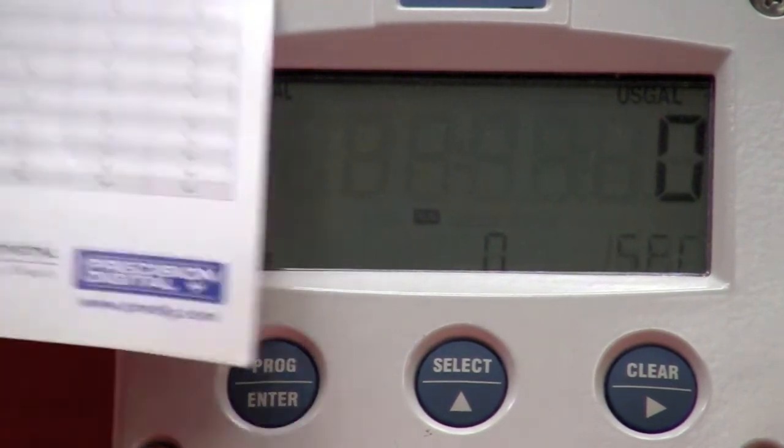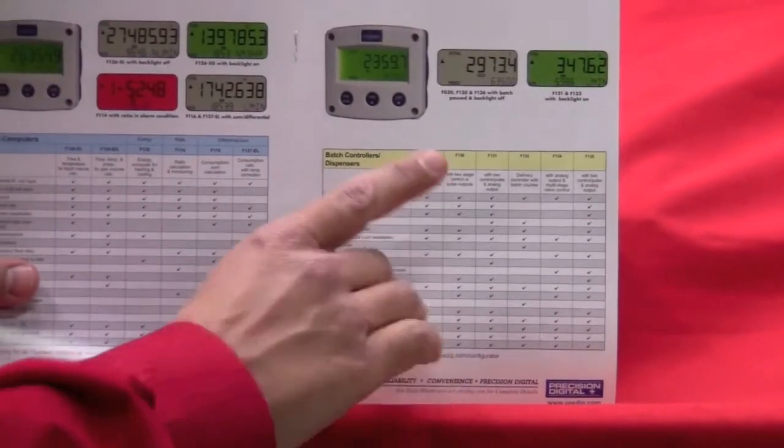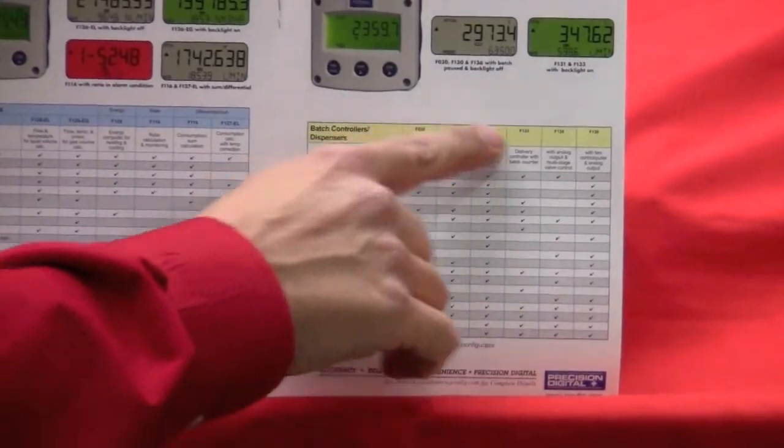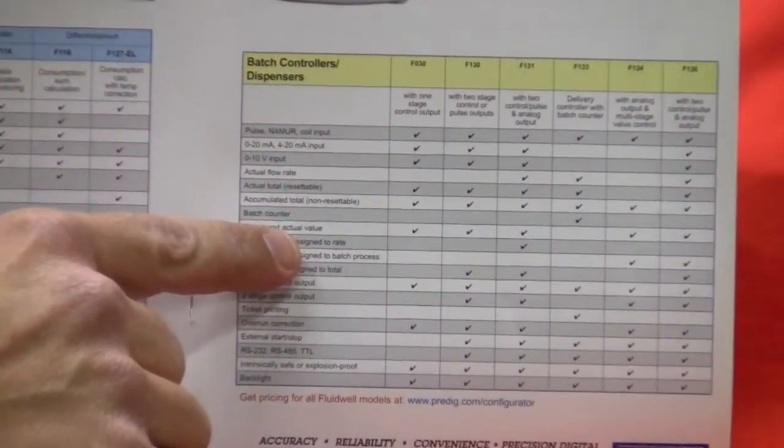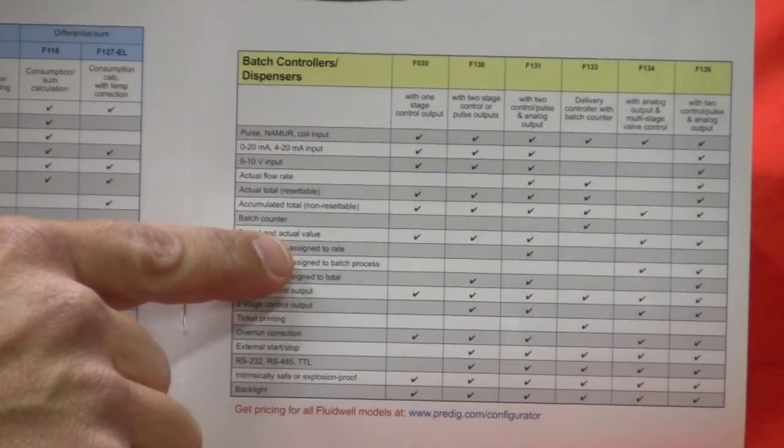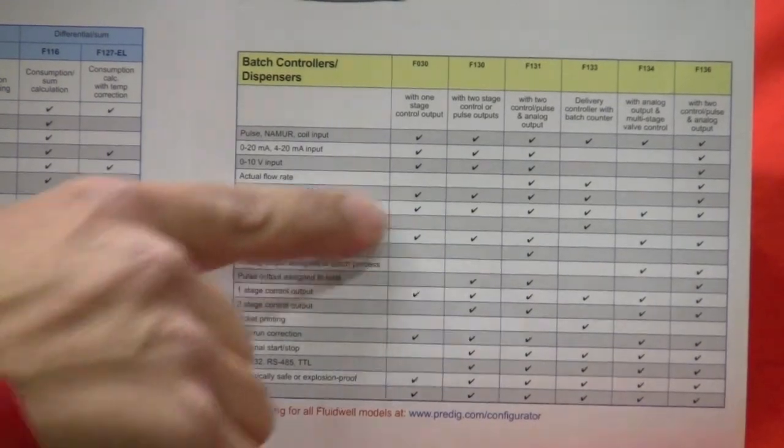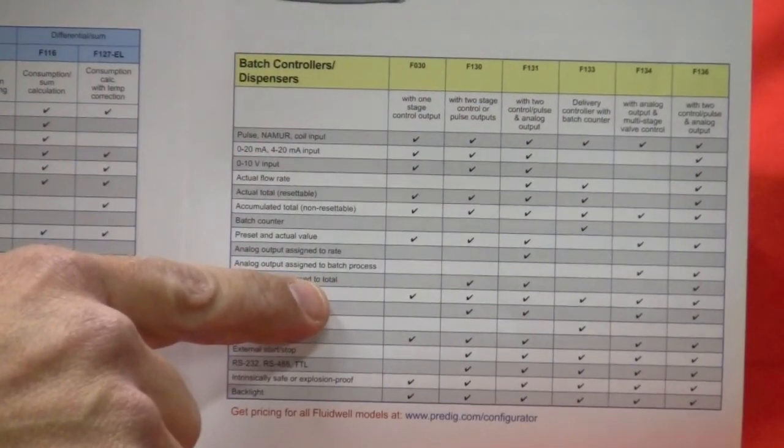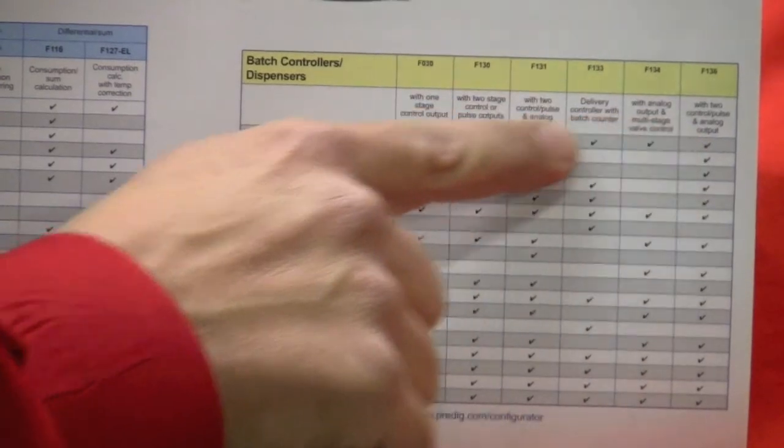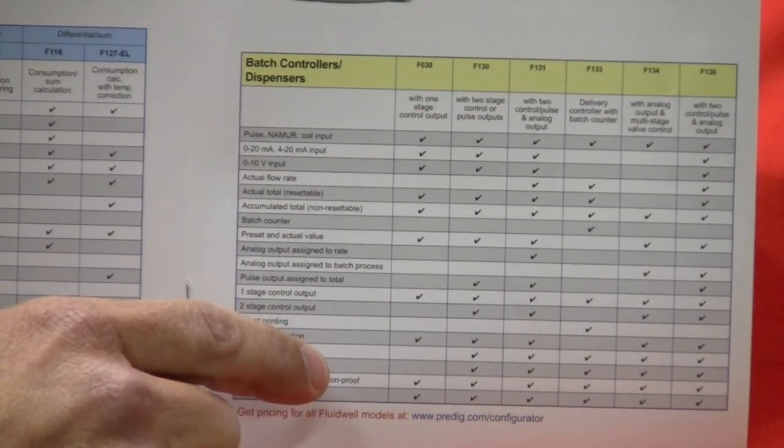There are a multitude of different options available depending on what your flow meter is. Again, you're going to select it based on what the input type is. So whether it's a 4 to 20 or pulse, a reed switch, what have you. And depending on what options you want to have available will dictate what particular model that you're going to go with.